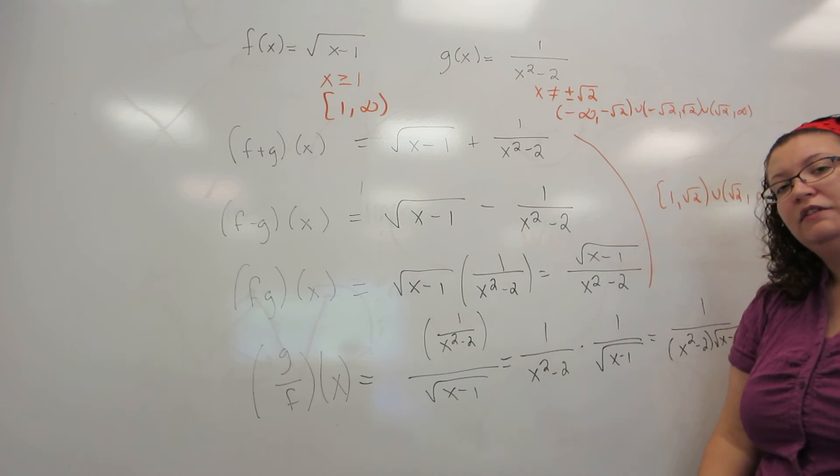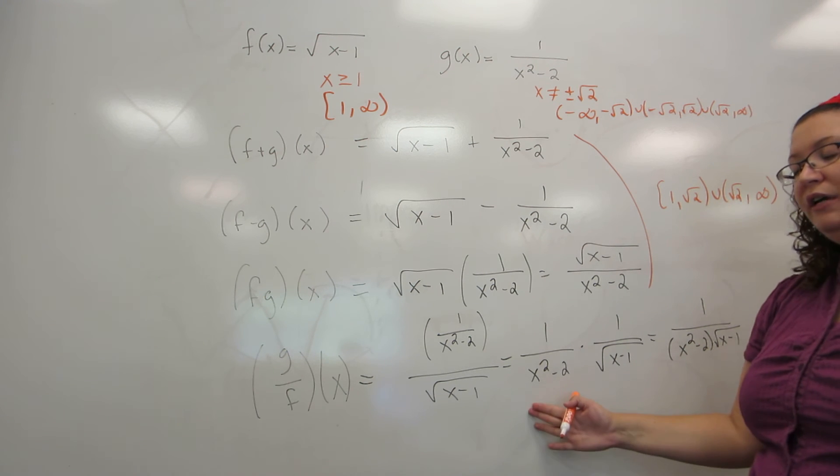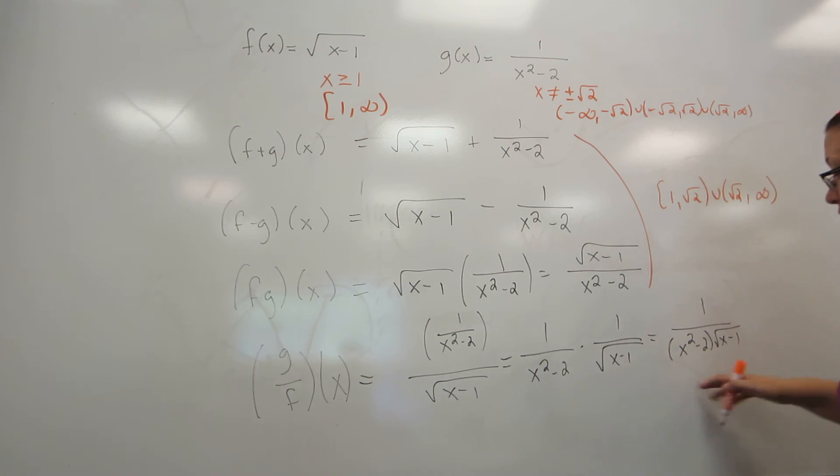As you might expect, division is a little bit more complicated because you're also not allowed to plug in anything that will make the denominator 0. So when we look at our final result, is there anything that all of a sudden makes the denominator 0 that we haven't taken into account?